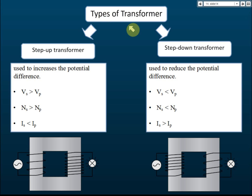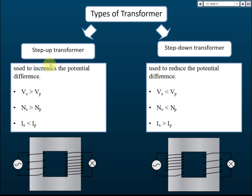There are two types of transformer. A step-up transformer is used to increase the potential difference — to increase voltage. That's why it's called step-up: step-up means to increase.